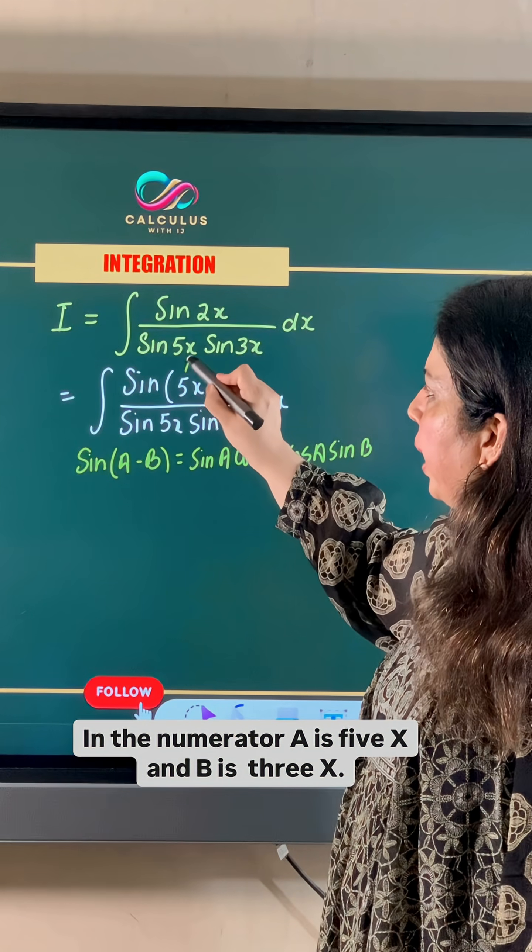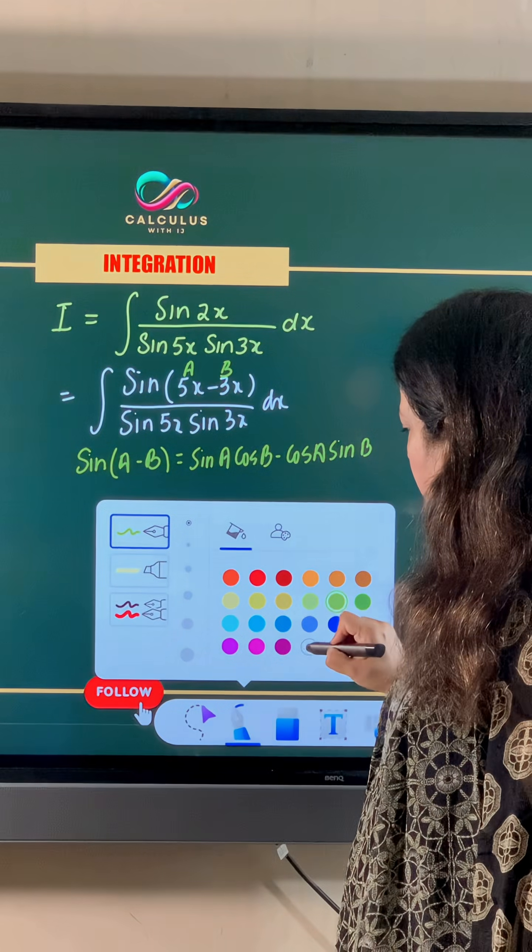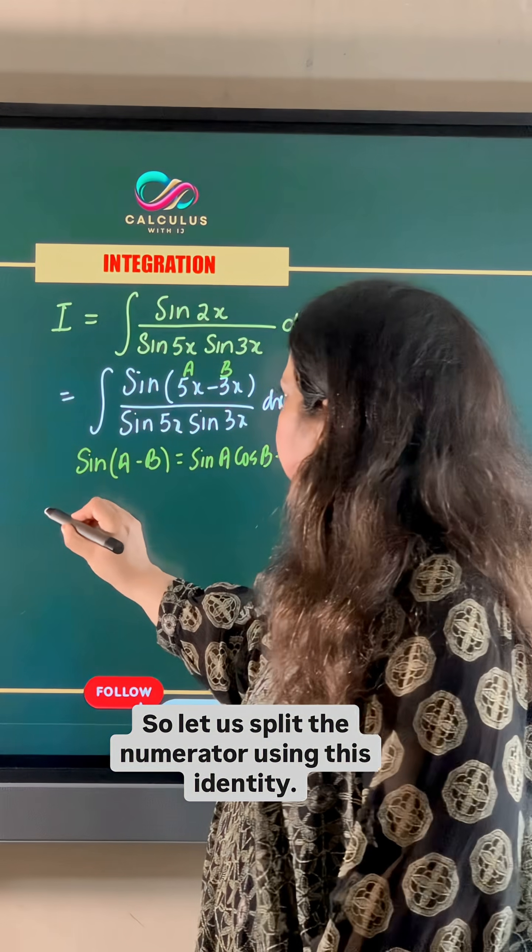In the numerator, a is 5x and b is 3x. So let us split the numerator using this identity.